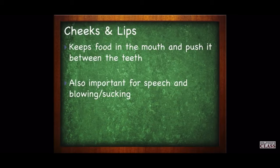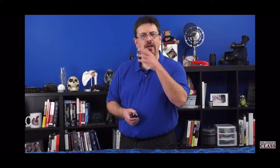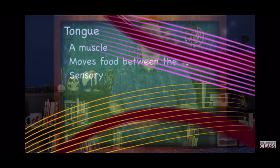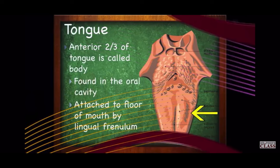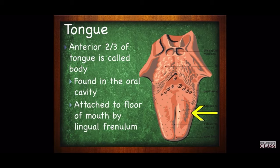The tongue is a muscle that moves food between the teeth during chewing, deals with sensory perception for taste — gustation — helps with speech, and propels food down the throat in the form of a bolus, acting like a catapult to help shove food down for swallowing. The anterior two-thirds of the tongue is called the body, found in the oral cavity and attached to the floor of the mouth by the lingual frenulum. The posterior one-third is called the root.